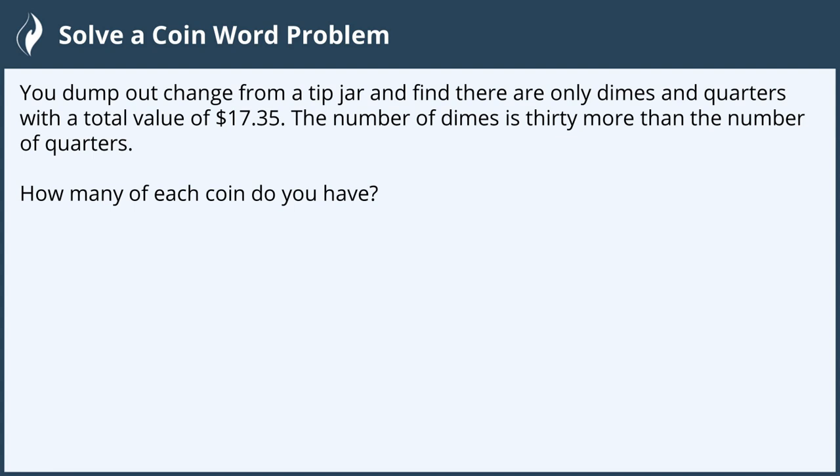We have two unknowns, the number of dimes and the number of quarters. I'm going to use D for the number of dimes and Q for the number of quarters. Dimes are worth 10 cents and quarters are worth 25 cents.